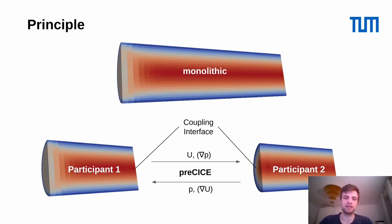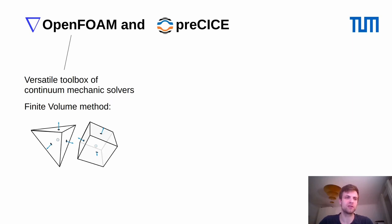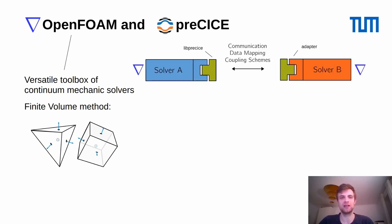Mainly velocity and pressures as well as their gradients, using the coupling tool preCICE. The tools I was using are preCICE and OpenFOAM as the fluid solvers. OpenFOAM is a versatile toolbox of continuum mechanics solvers, most of which use the finite volume method. preCICE is the coupling tool we are all here to talk about, and most of you know that preCICE provides several adapters — in this case the OpenFOAM adapter — that attach to the corresponding solvers. These adapters communicate to the main library of preCICE, which handles the communication, data mapping, coupling schemes, and everything regarding the coupling of the two participants.